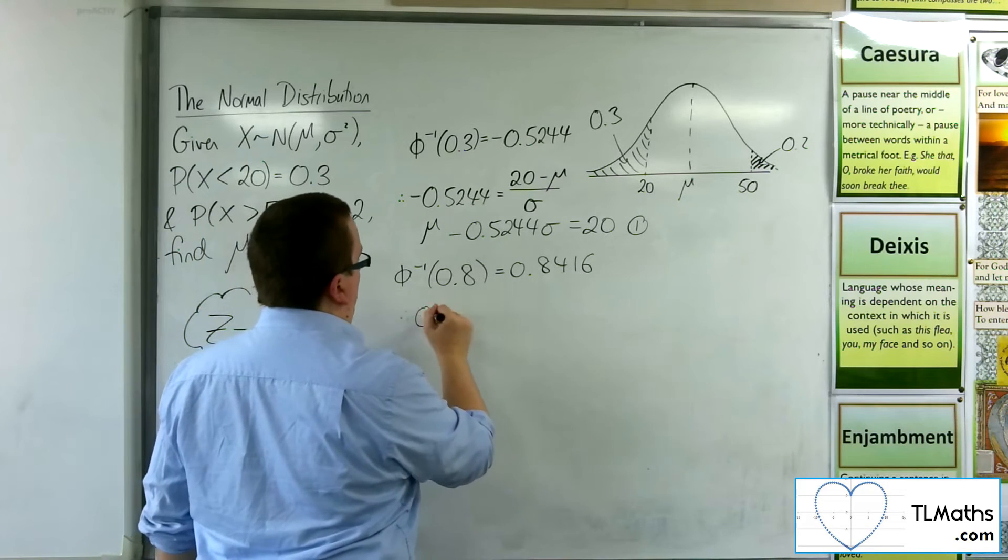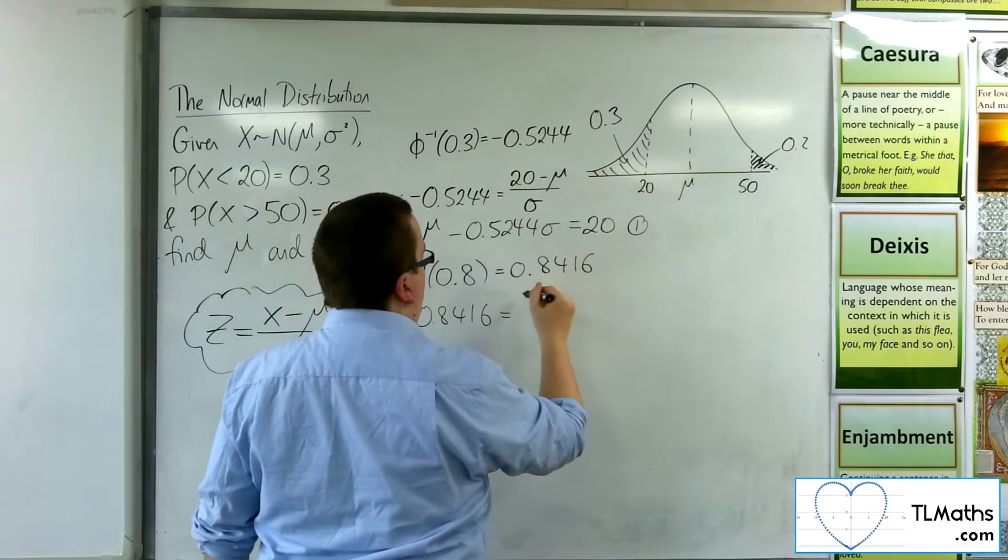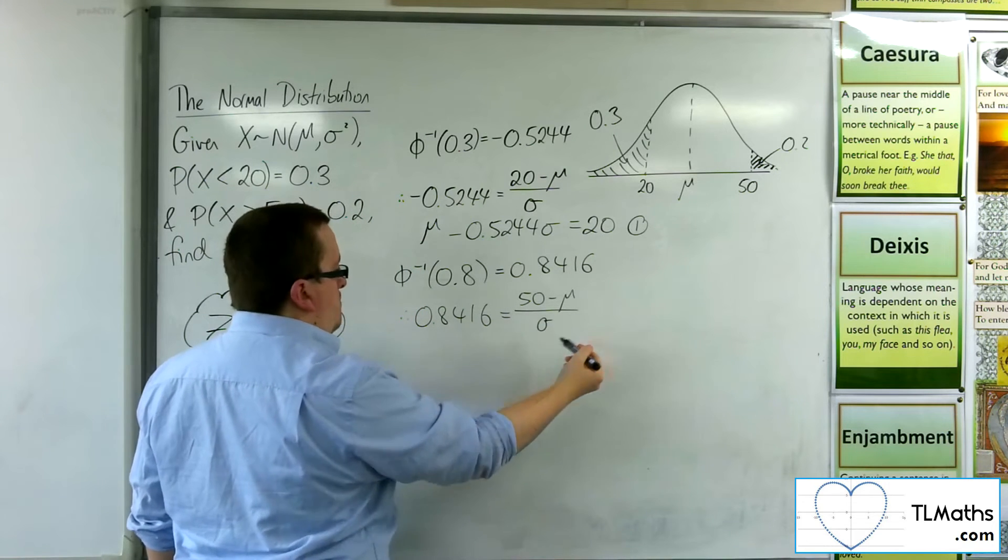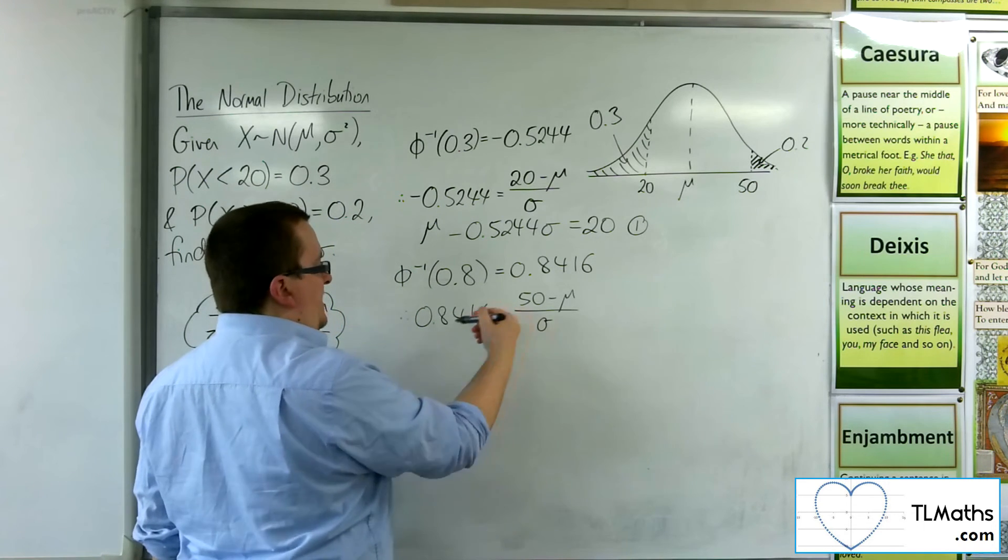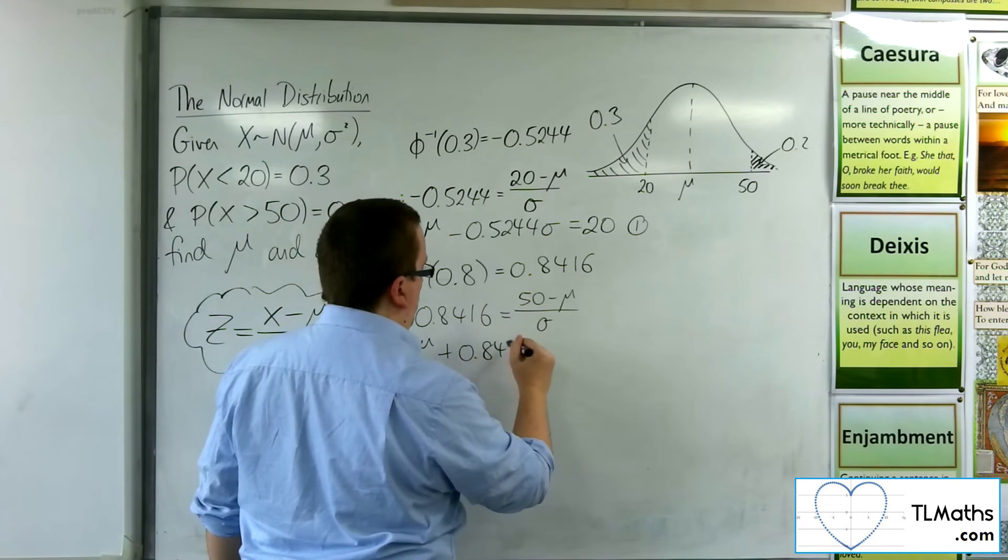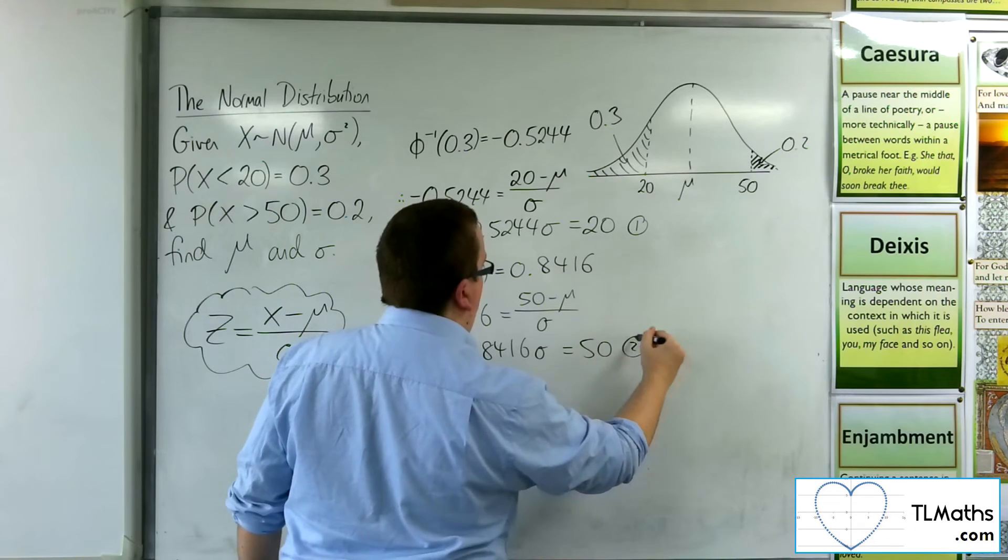So therefore, 0.8416 is equal to the x value, 50. Take away the mean divided by the standard deviation. So multiplying up by the σ, adding the μ to both sides, we get μ plus 0.8416 σ is 50. And there is equation 2.